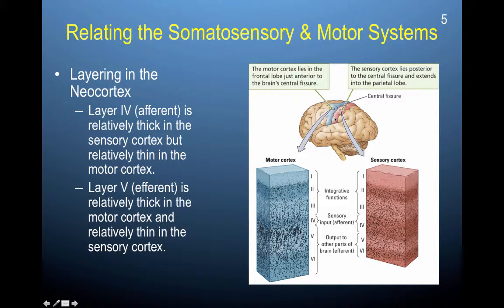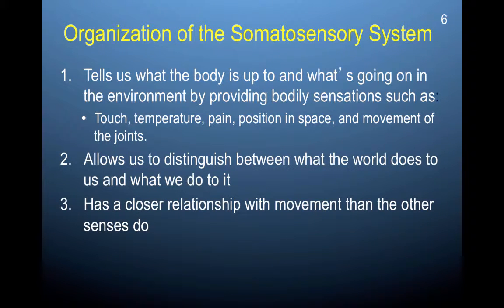This reflects the feedback loops discussed in the last lecture. If you want to make a motor action, the execution plans are in the motor cortex and are sent down the spinal cord. Then various parts of your body — such as moving your fingers — confirm that a movement has been made via the somatosensory cortex. This fundamental organization between motor control and the somatosensory system tells us what the body is up to. Bodily sensations include touch, temperature, pain, the position of our body in space, and movement of the joints.